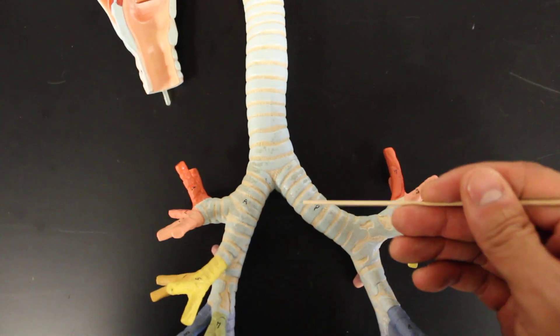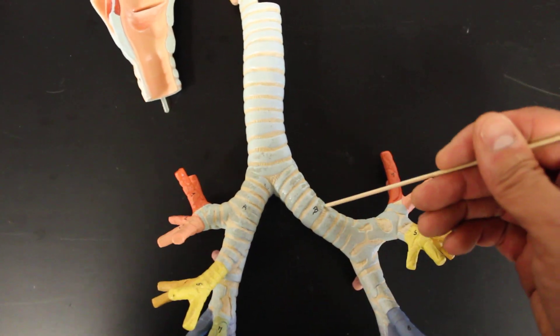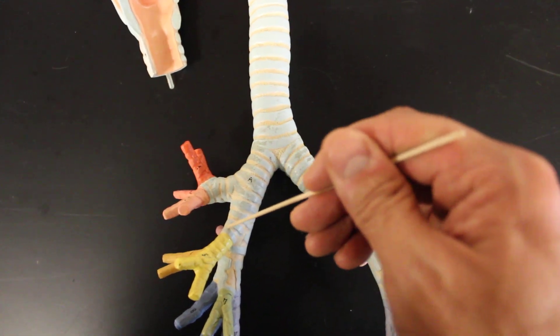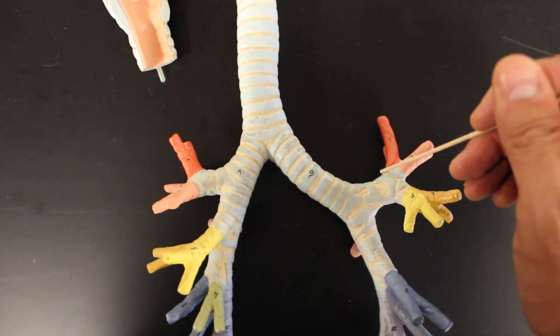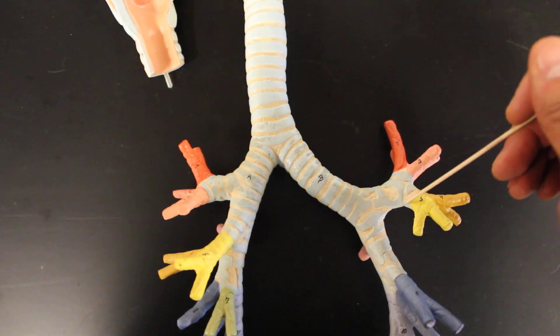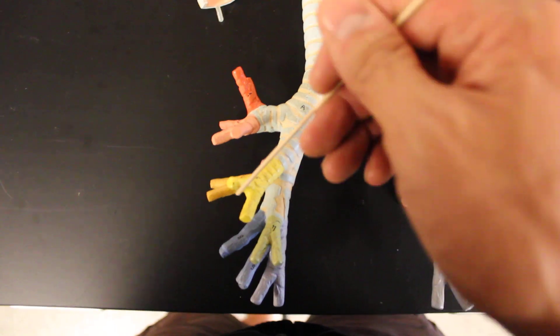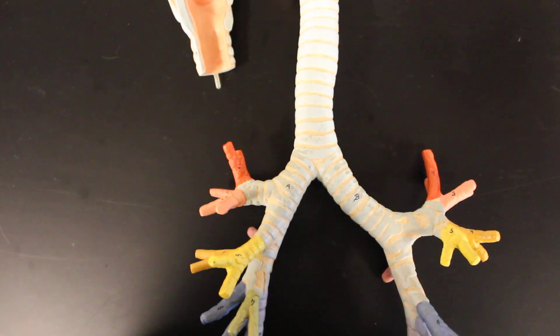Trachea splits into the right and left primary bronchi. Primary bronchi split into secondary bronchi. Two on the left side, three on the right. One, two, three. And then after that it comes tertiary bronchi. Tertiary, two, and then bronchioles. And then bronchioles will split into more bronchioles until the end of the terminal bronchioles.